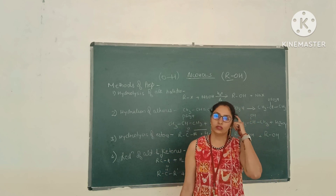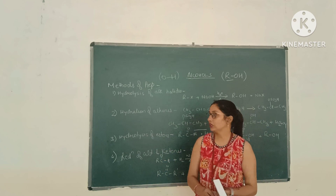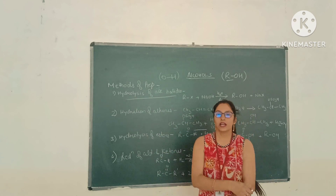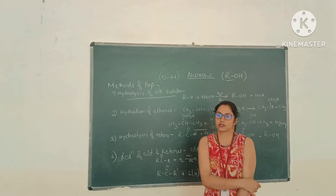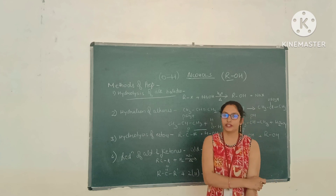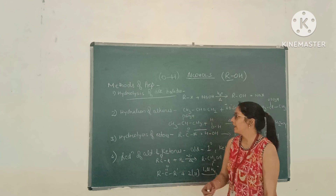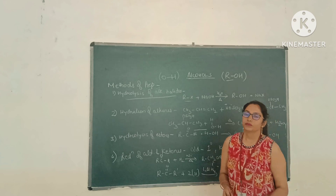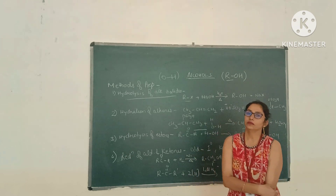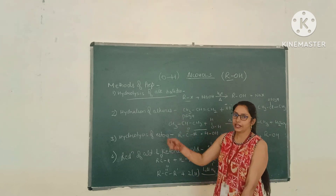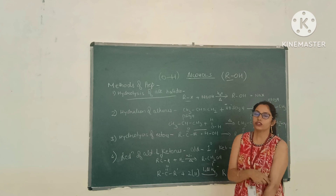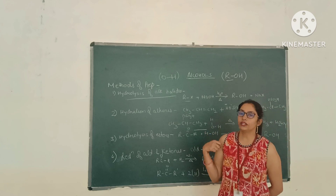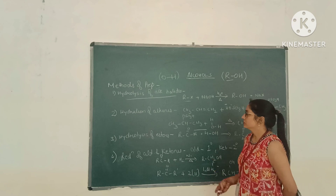The first method of preparation of alcohols is hydrolysis of alkyl halides. Alkyl halides means RX. If we hydrolyze RX — hydrolysis means we add hydroxide to the alkyl halide — instead of chlorine or instead of halogen, we add a hydroxyl group, then we will get the alcohols.